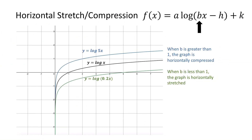If we change the value of b so that it's bigger than one, the graph in blue is horizontally compressed — that's why it looks taller. If we change it to a b value that is less than one, the graph is horizontally stretched, like the graph in green.